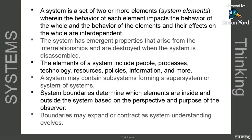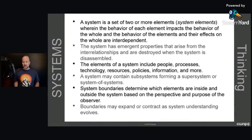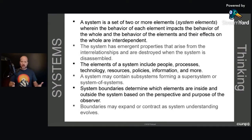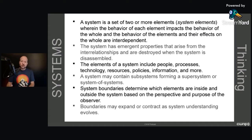We've talked a little about systems thinking and kind of defined it, but what we haven't done is really defined a system per se. So let's define a system very clearly. A system is a set of two or more elements — we call them system elements — wherein the behavior of each element impacts the behavior of the whole, and the behavior of the elements and their effects on the whole are interdependent. Systems thinking is thinking about the entire collective of all the parts and how they impact one another.